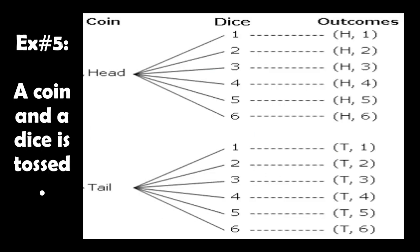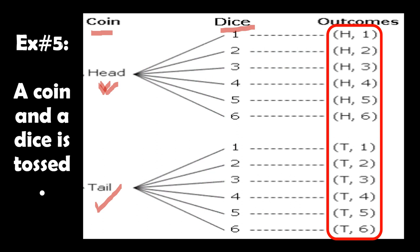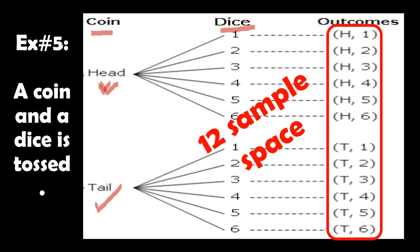Example number five: a coin and a die are tossed. The coin is tossed first. The possible results for the coin are head or tail. After tossing the coin, you throw a die which has 6 possible outcomes. So the possible sample space is 12.